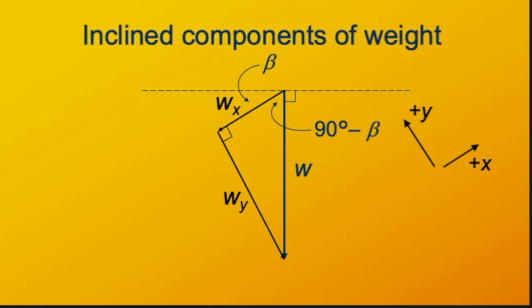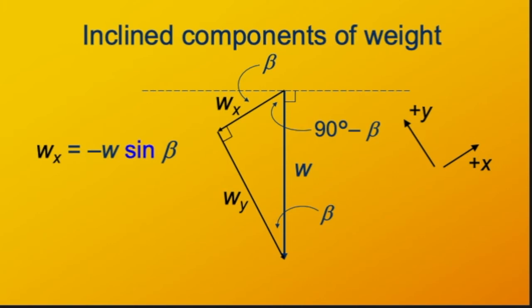We know the internal angles of a triangle add up to 180 degrees, so the two acute angles of the right triangle must add up to 90 degrees. Therefore the other angle of this right triangle must be beta again. The x component is opposite this angle beta, and the y component is the adjacent side. So the x component has magnitude w sine beta — and it's negative because the positive x direction is uphill while the x component points downhill. The y component has magnitude w cosine beta — and it's also negative, because the y component of weight points opposite to the positive y axis.